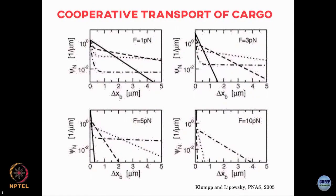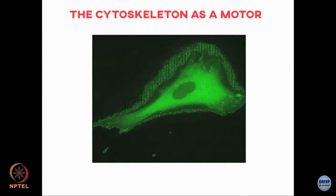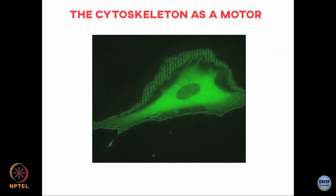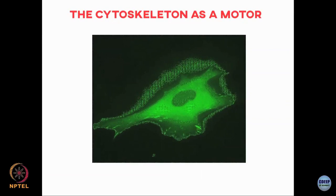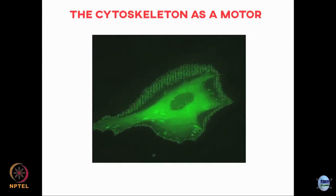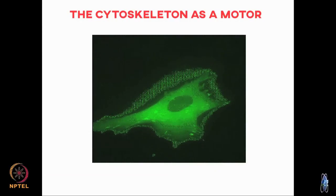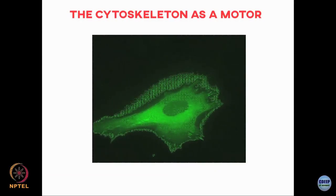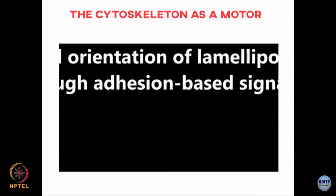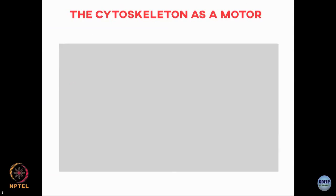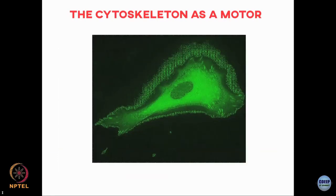Let me switch gears and talk about a different sort of motor: the cytoskeleton itself as a motor. There are translocation motors which work on cargoes and transport stuff from one end to another. On the other hand, I can consider cytoskeleton filaments themselves — microtubules, actins and so on — as motors, in that they take in ATP to polymerize and once they polymerize they can use that energy to exert forces.